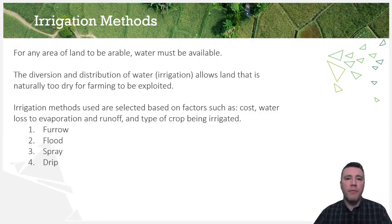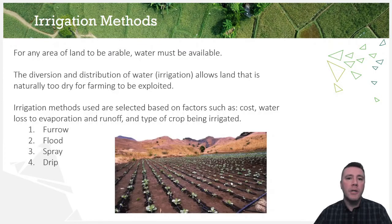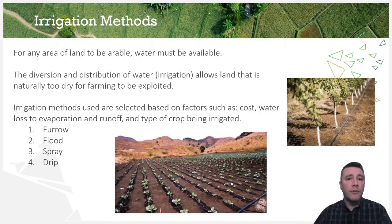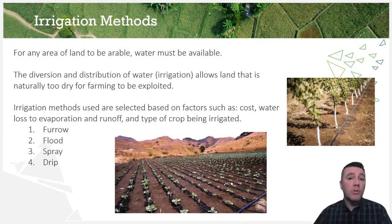The final major type of irrigation is drip irrigation. This system requires a network of tubes that delivers water directly to the root zone of the plant. Although quite expensive, this method maximizes the efficient use of water and minimizes water loss. Drip irrigation is most suitable for vegetable crops grown in rows, fruit-producing trees, and vine crops.